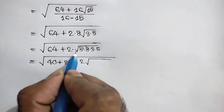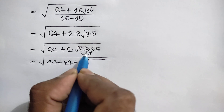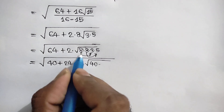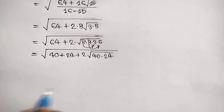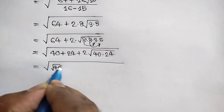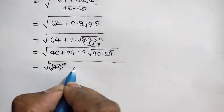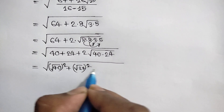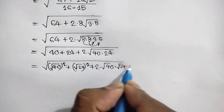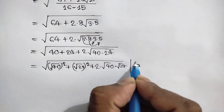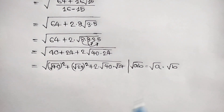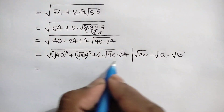We rewrite this as square root of (40 plus 24 plus 2 times square root of 8 times 3 times 5). Here 8 times 5 is 40 and 8 times 3 is 24. We can write 40 as (square root of 40) squared and 24 as (square root of 24) squared, plus 2 times square root of 40 times square root of 24.